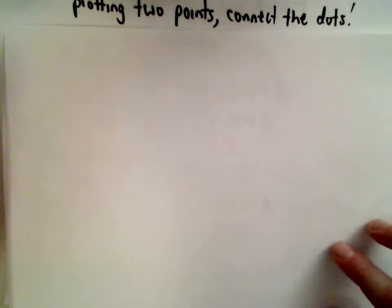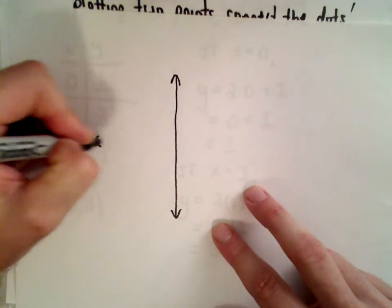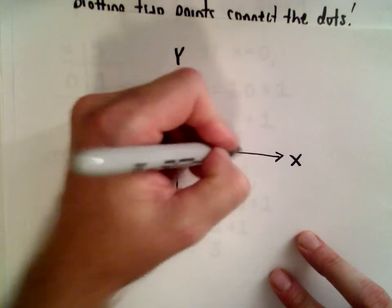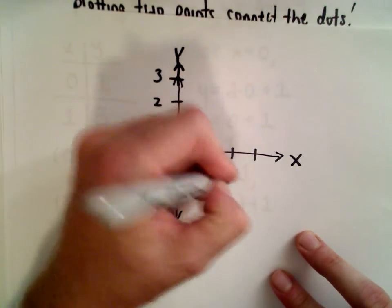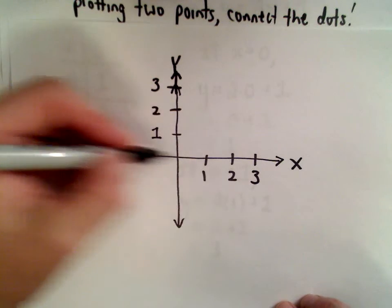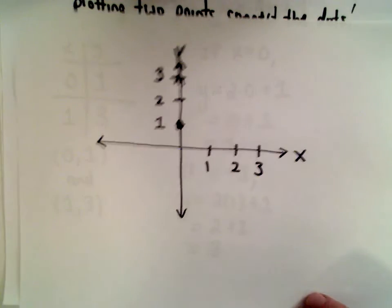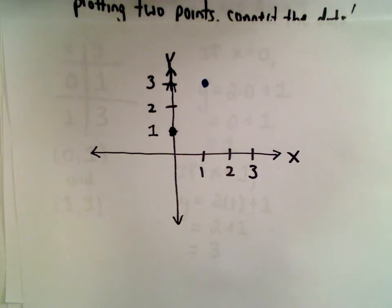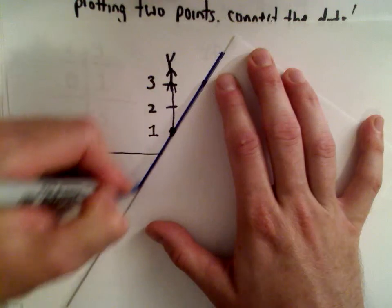Let me graph this. Here's the x-axis and here's the y-axis. One point was at 0 comma 1, which is right there on the y-axis. The other point was 1 comma 3 — go to x equals 1, then up 1, 2, 3 units. Now we just play connect the dots between those two points, and that's our line.